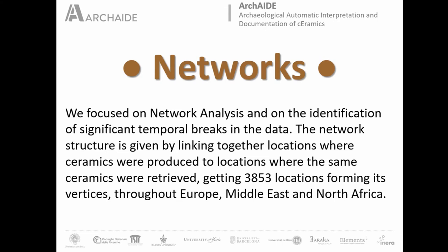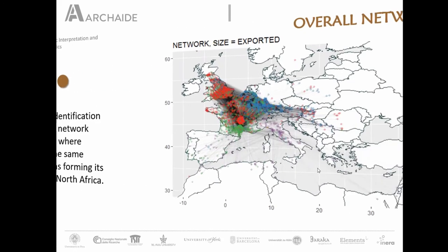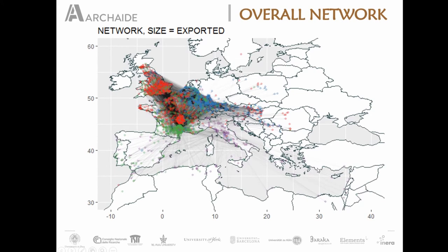As I said before, the structure is given by linking together locations where ceramics were produced to locations where the same ceramics were retrieved, with a sum of 3,853 different locations all over the world. This is the first result showing the overall network, with all the data linked together in the way I explained.